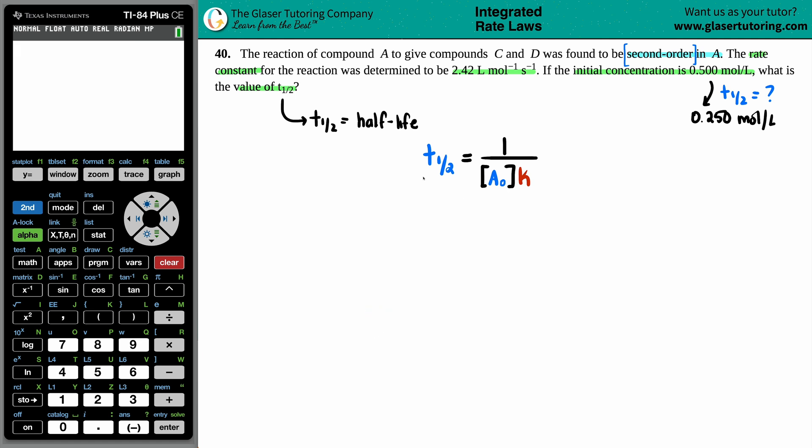Okay. So we're trying to solve for T half. That's the half-life. And for second order, it's reliant on this bracket, right? A zero concentration. And it is the initial concentration. That's why there's a zero here. Zero just stands for that no time has passed. Zero time has passed. So that's your initial concentration.